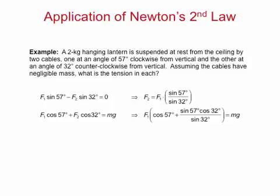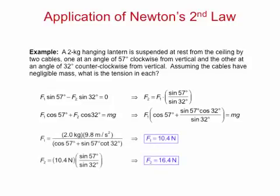So now all we have to do is algebra, solving two simple equations for the two unknowns. I used the first equation to solve for F2 in terms of F1, and then I substituted the result into the second equation, leaving F1 as the only unknown in that equation. Plugging in numbers and solving for F1 gives F1 equals 10.4 newtons, and then plugging that value back into the very first equation gives F2 equals 16.4 newtons.